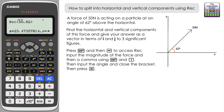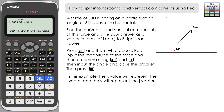The x component is adjacent to the angle, making it the horizontal component — this represents the i component of our vector. The result is 23.4735..., so to three significant figures that's 23.5i. Scrolling across to the y component, this is the vertical component representing the j vector, which is 44.1. Putting those together: 23.5i + 44.1j is our answer as a vector in terms of i and j.